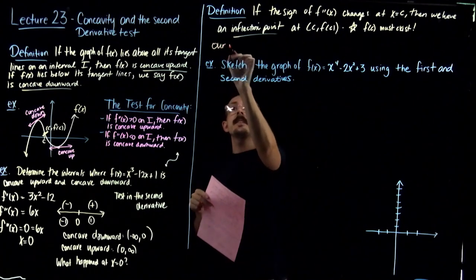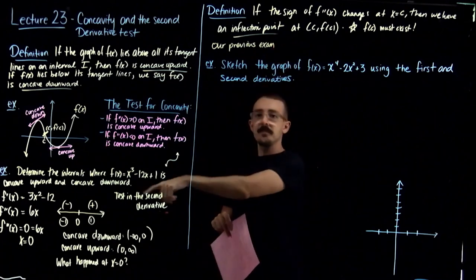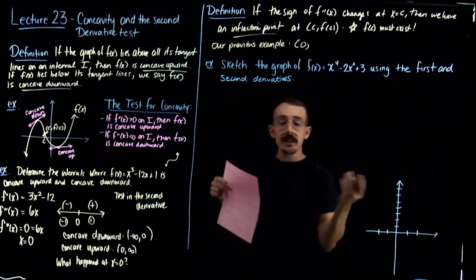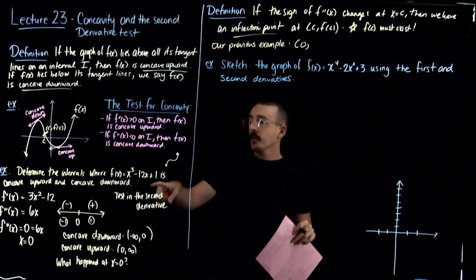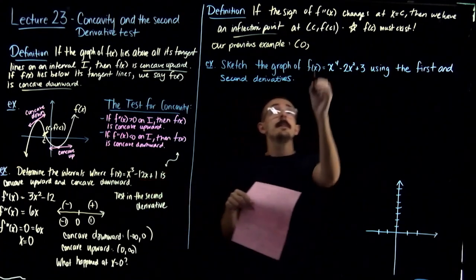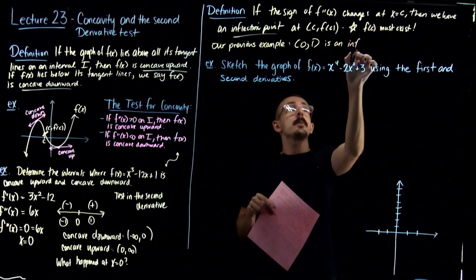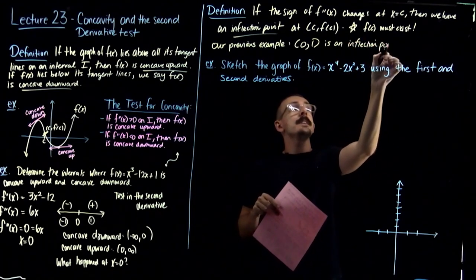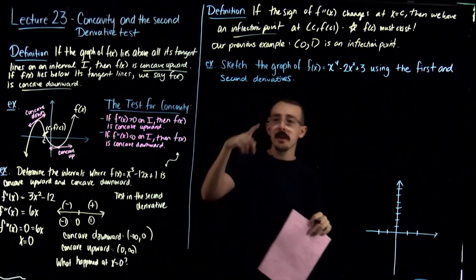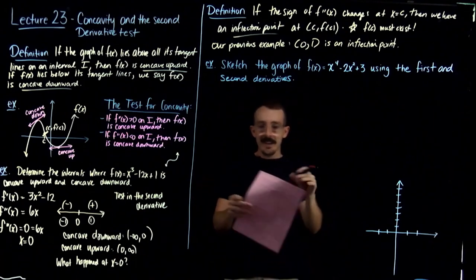In our previous example using f(x) = x³ - 12x + 1, we found the inflection point. If you plug zero into the original function, you get 1. So (0, 1) is an inflection point. It's just another feature of the graph — just like finding a maximum or minimum, you plug the x-value back into the original to find the actual coordinate.